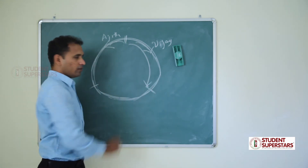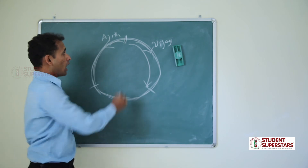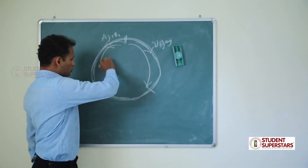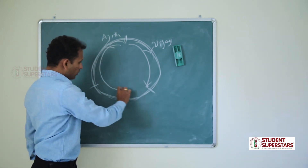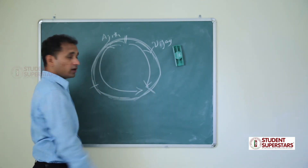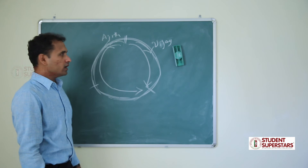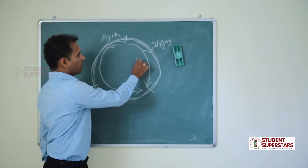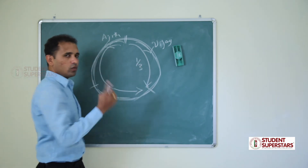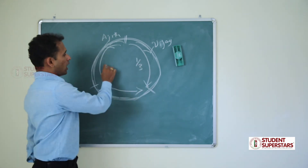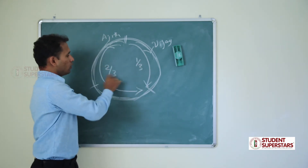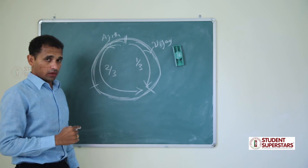So after one minute, Vijay will be here — having covered one third of the distance. Since they are running in opposite directions and meet after one minute, Ajit should cover two thirds of the distance in that same one minute. So Vijay is covering one third in one minute and Ajit is covering two thirds in one minute.